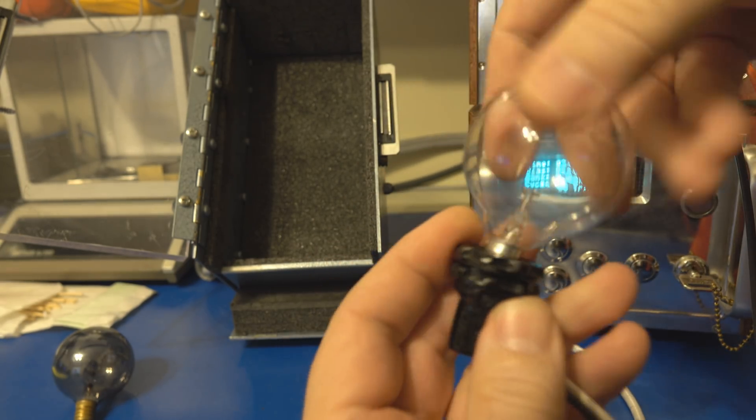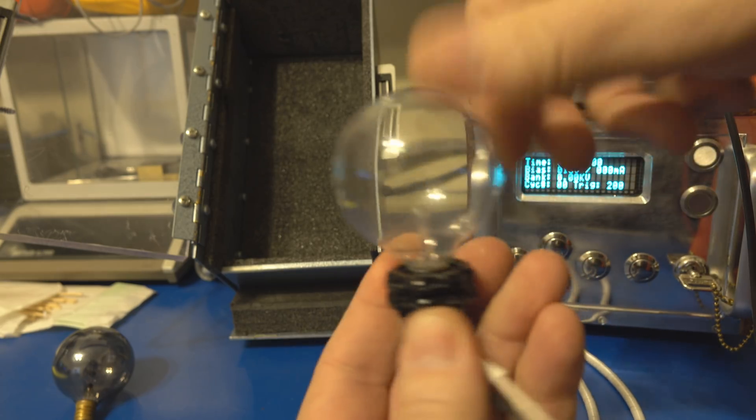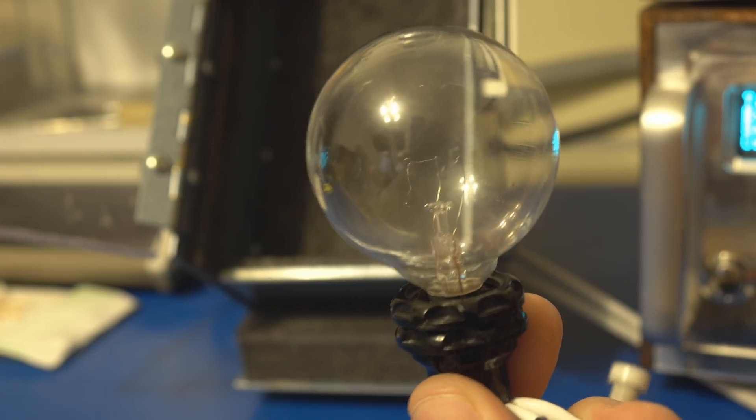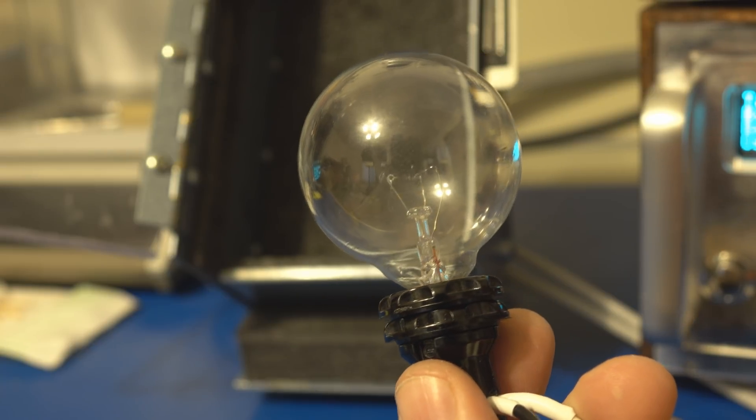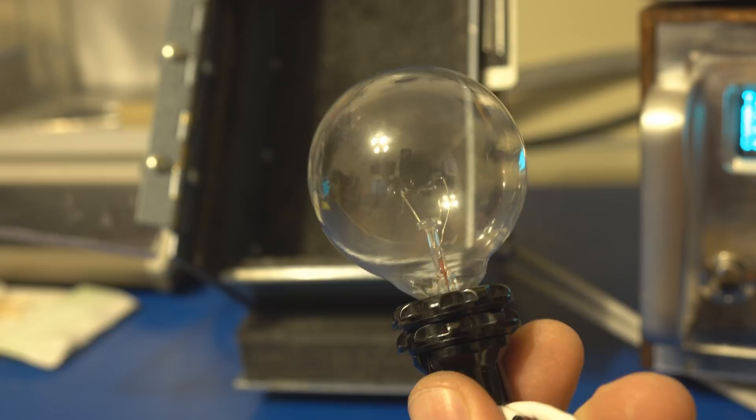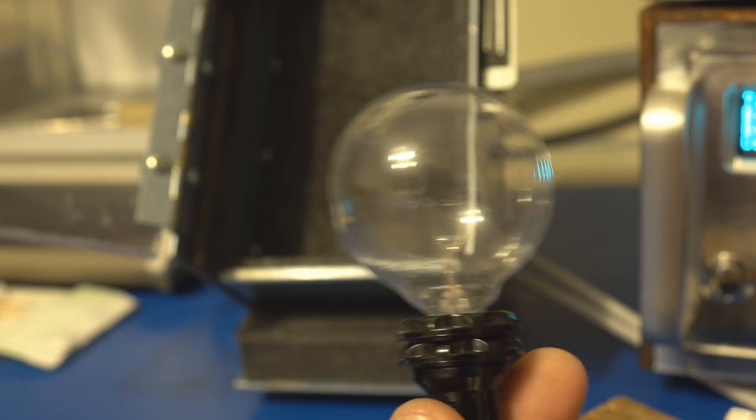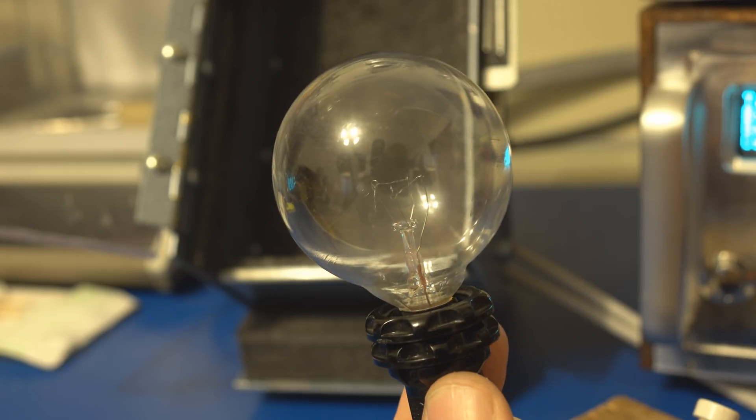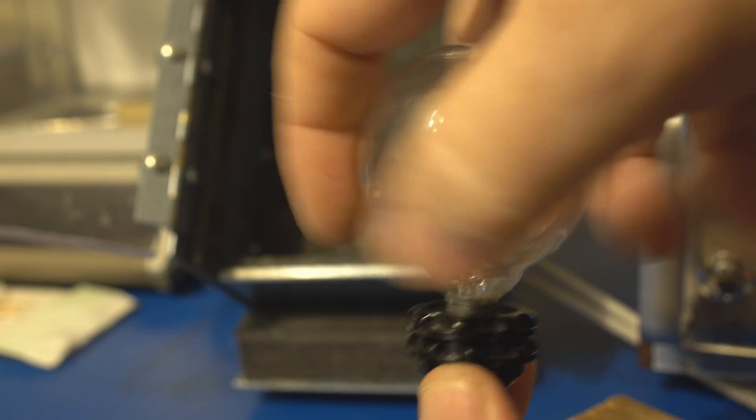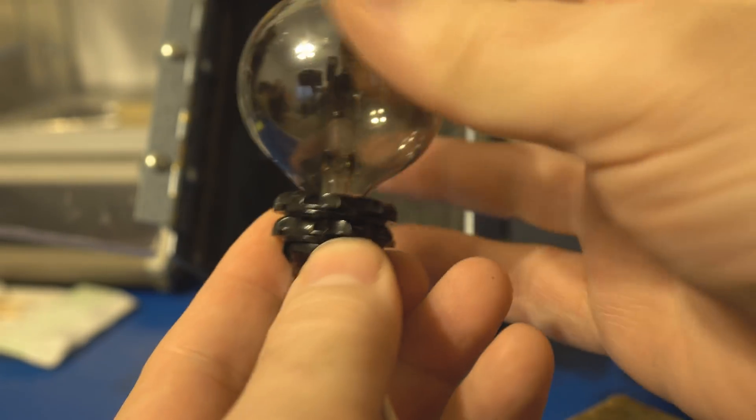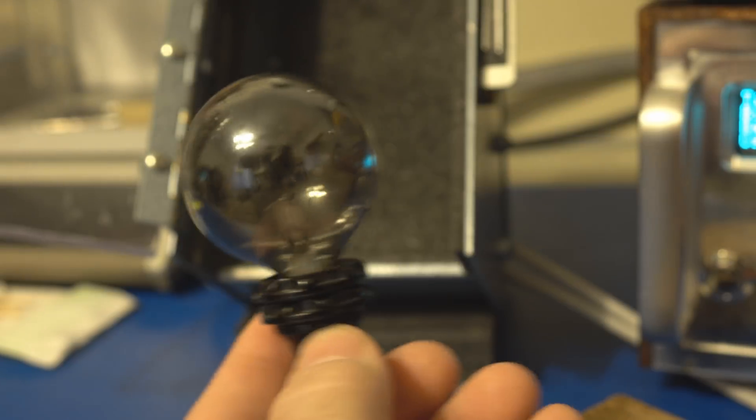So we're going to be installing the same bulb that we were testing. Again this has the open filament. So unfortunately it looks like the break in the filament is just too wide of a gap for us to jump across now. But we do have the second light bulb that we can use. At least the socket itself didn't break down this time.